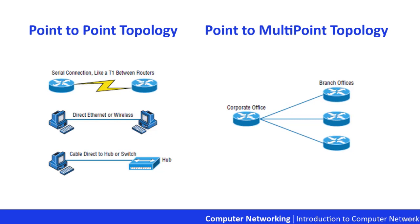The routers in a point-to-point topology can be linked by a serial cable, making it a physical network. Or if they are located far apart and connected only via a circuit within a frame relay, it's a logical network instead.